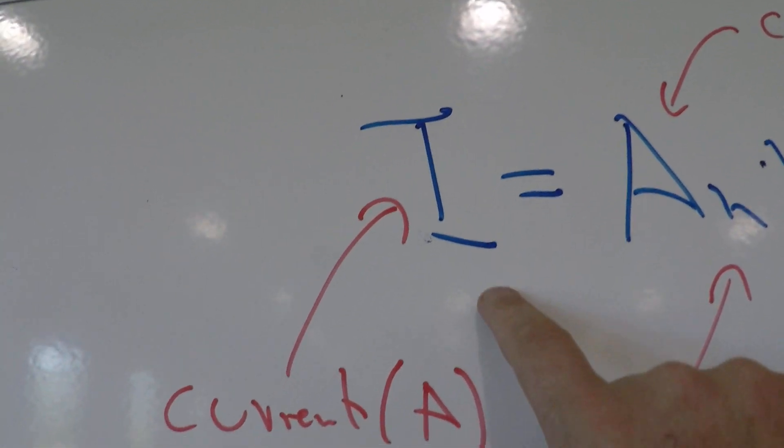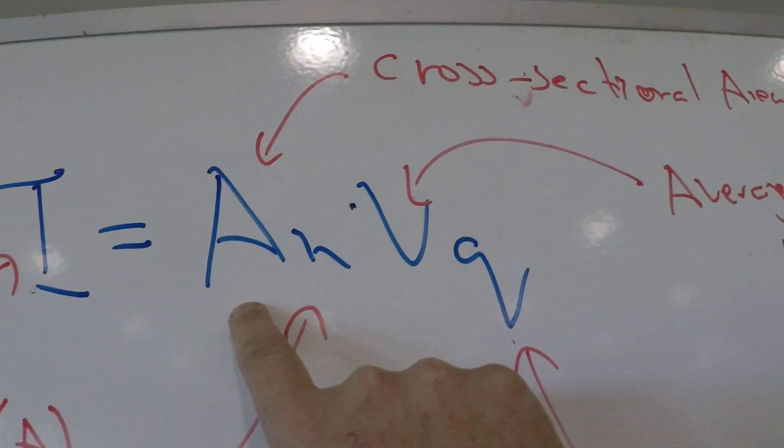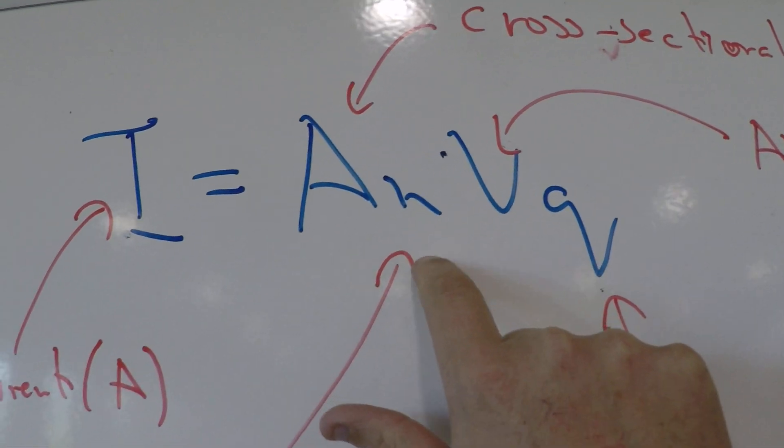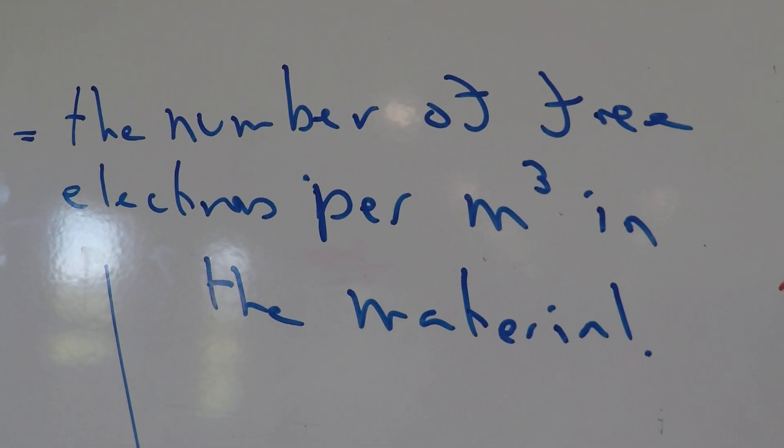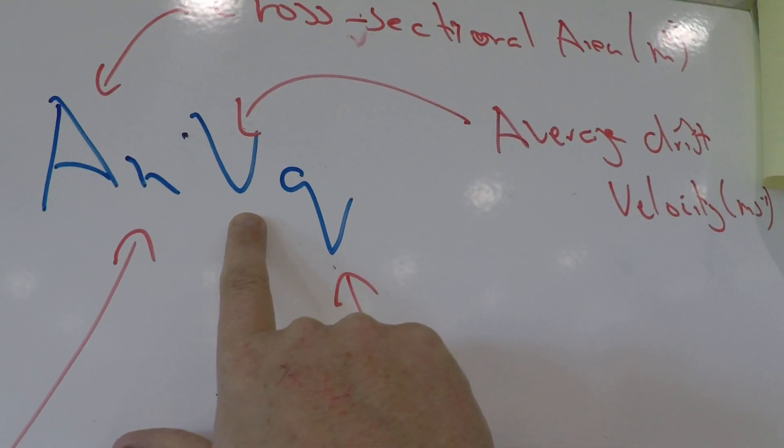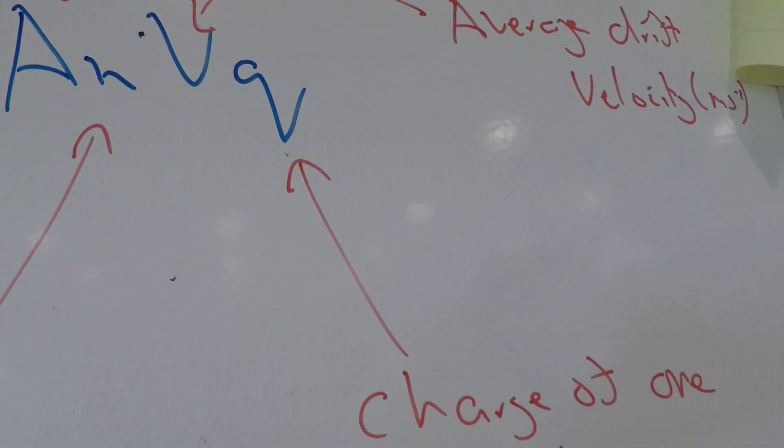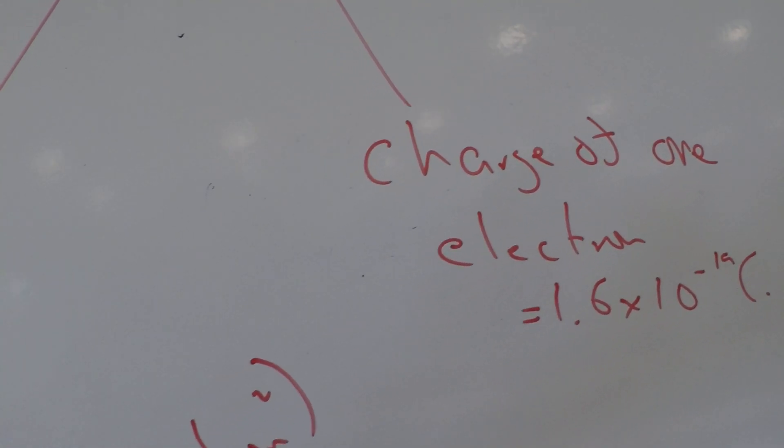So I is the current through a wire, A is the cross-sectional area, N is the number of free electrons per metres cubed in the material, V is the average drift velocity, and then Q, well that's the charge of one electron, which is 1.6 times 10 to the minus 19 coulombs.